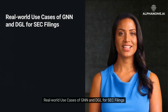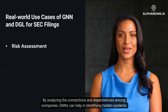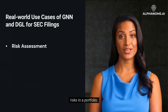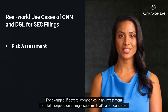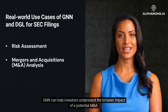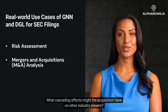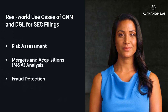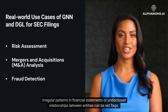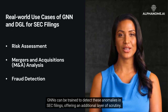Real-world use cases of GNN and DGL for SEC filings. Risk Assessment: by analyzing the connections and dependencies among companies, GNNs can help in identifying hidden systemic risks in a portfolio. For example, if several companies in an investment portfolio depend on a single supplier, that's a concentrated supply chain risk. Mergers and Acquisitions: GNNs can help investors understand the broader impact of a potential M&A — how interconnected is the target company and what cascading effects might the acquisition have on other industry players? Fraud Detection: irregular patterns in financial statements or undisclosed relationships between entities can be red flags. GNNs can be trained to detect these anomalies in SEC filings, offering an additional layer of scrutiny.